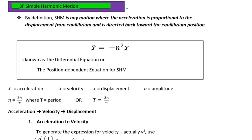What we know is that a particle that moves according to simple harmonic motion will always have its acceleration expressed as minus n squared x. Now where that comes from is its definition: acceleration is proportional to the displacement from equilibrium and is directed back towards the equilibrium position.